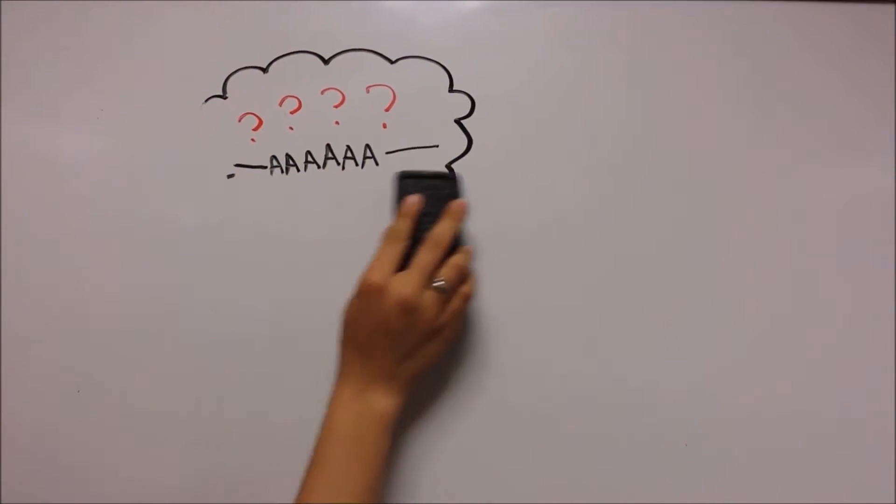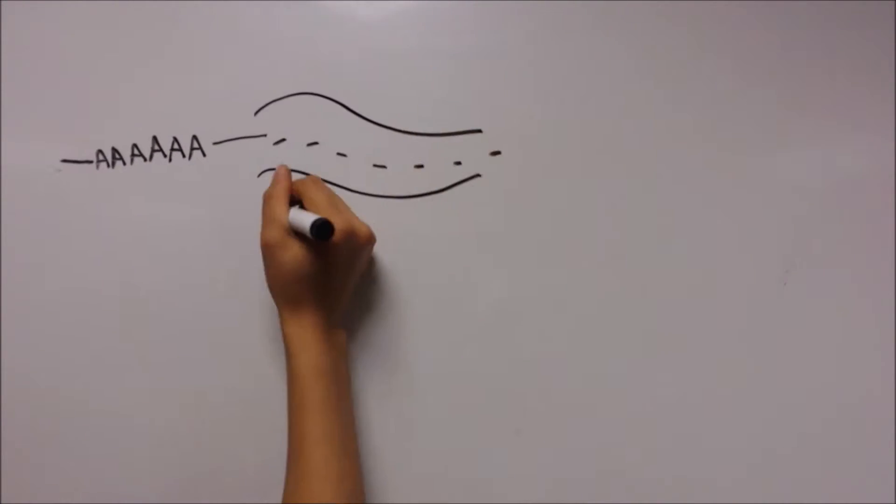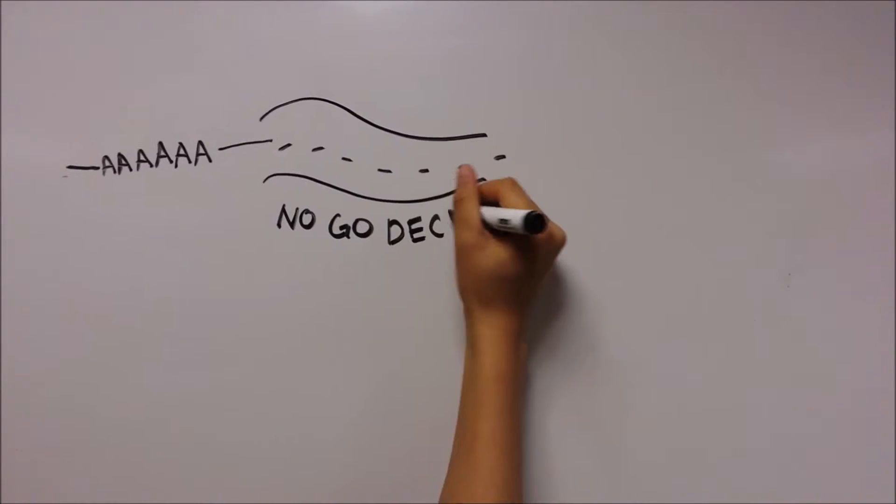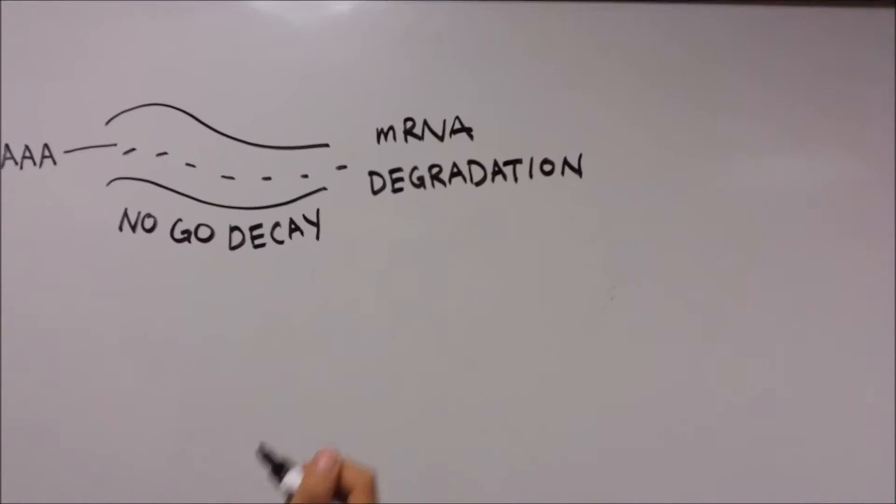The findings indicated that inserting a poly-A sequence into the mRNA also led to rapid mRNA degradation, and their initial thought was that this was mediated by another mRNA decay pathway called no-go decay.